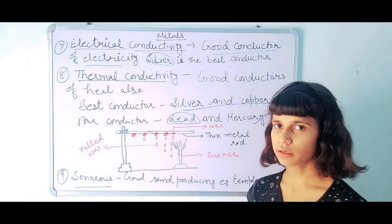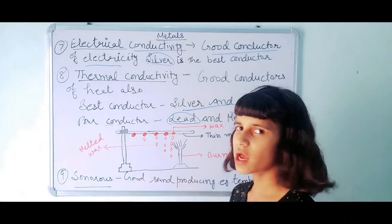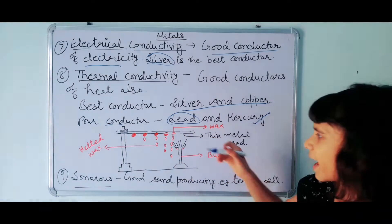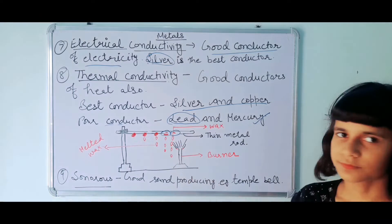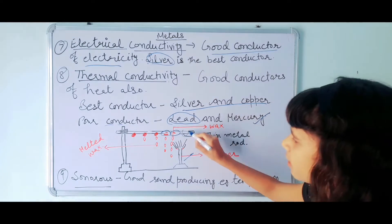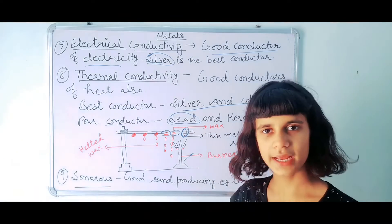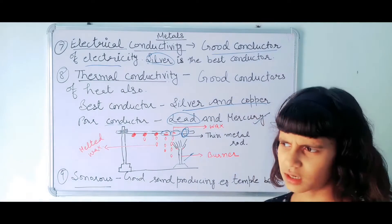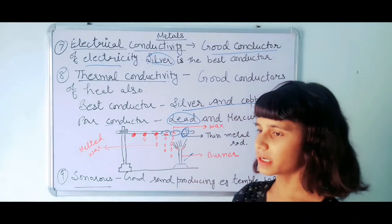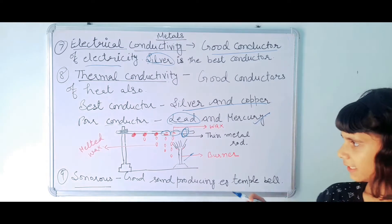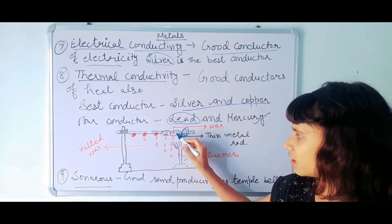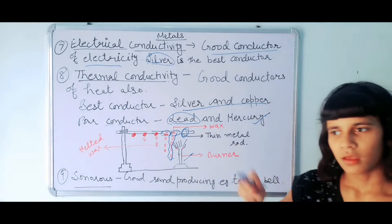With the help of this activity you can better understand that metals are good conductors of heat. We have placed drops of wax on a thin metal rod — this black color rod — and we start burning from one end using a burner. The metal gets heated up and the wax also gets heated. If metals were not good conductors of heat, the wax would not get heated, but here the wax drops have fallen down, showing metals conduct heat well.